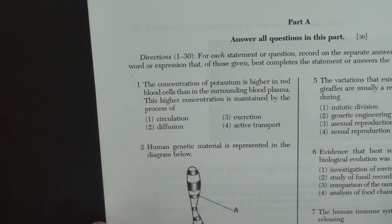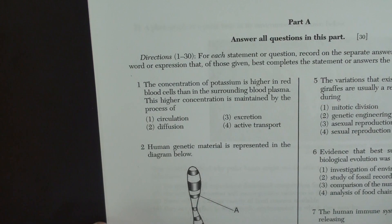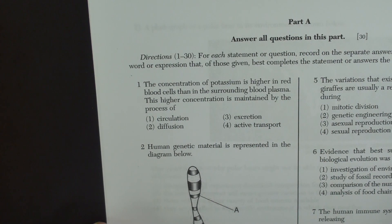Okay, question number one. The concentration of potassium is higher in red blood cells than in the surrounding blood plasma. This higher concentration is maintained by the process of.